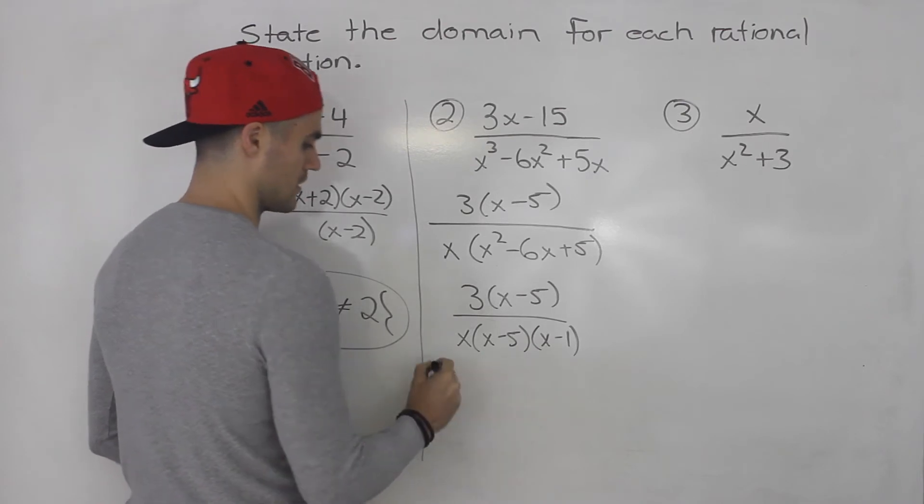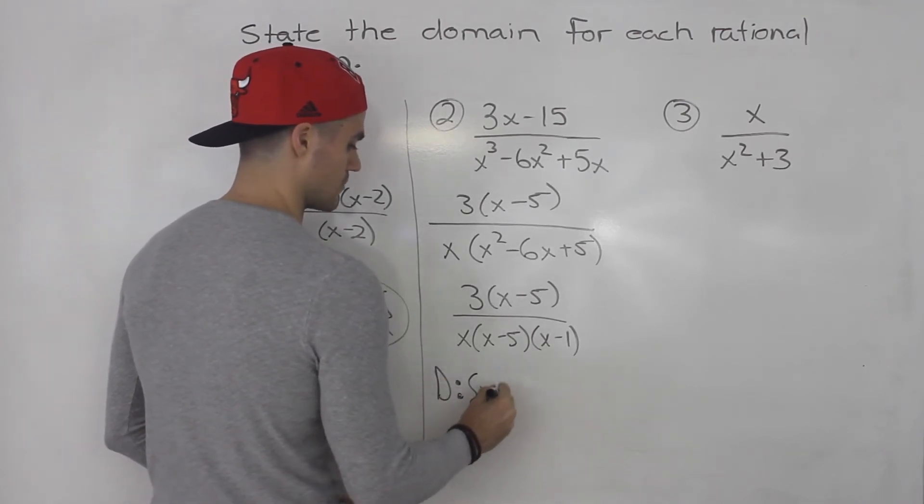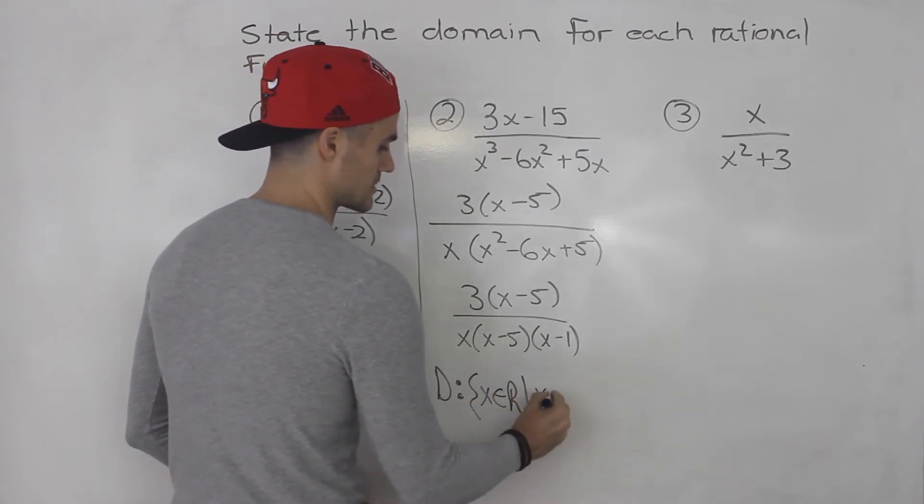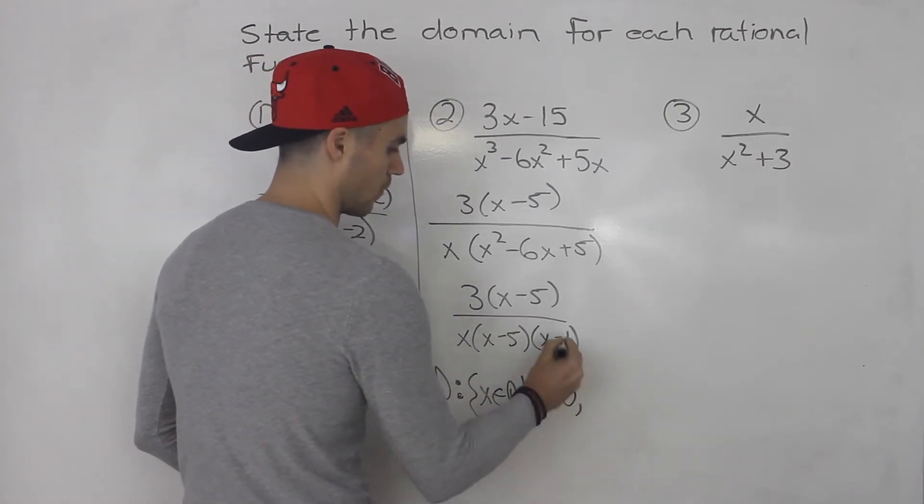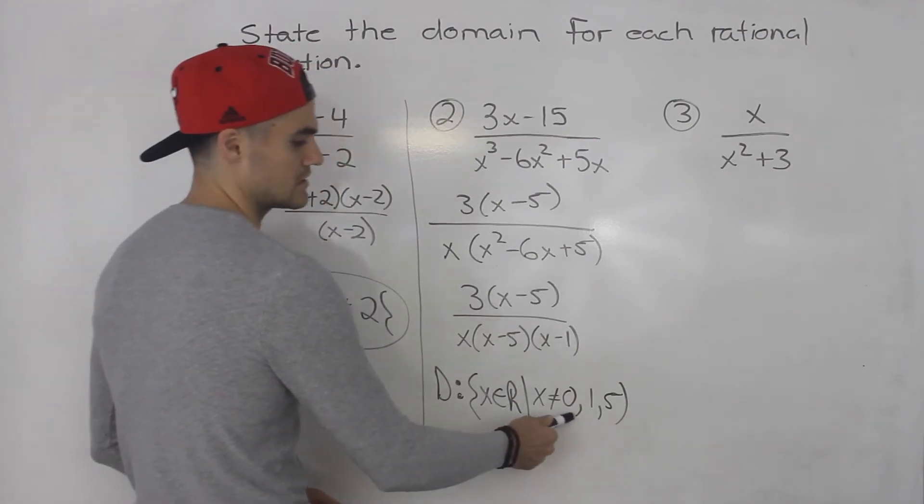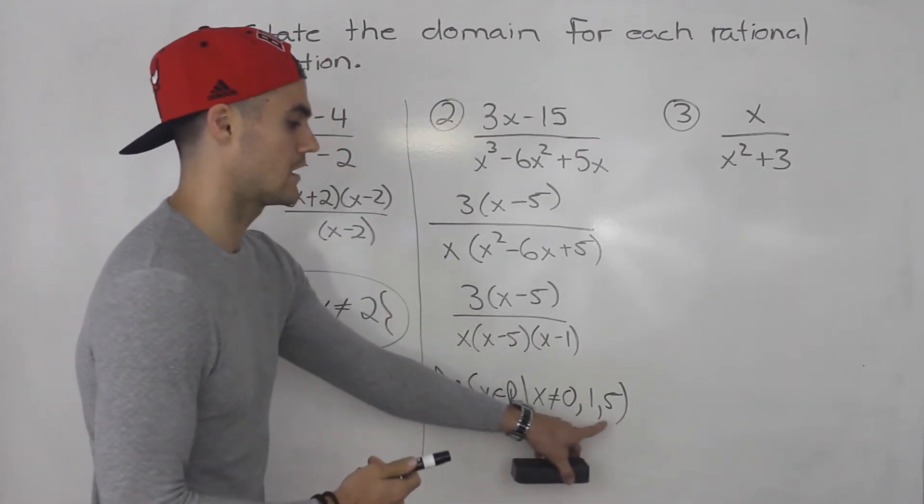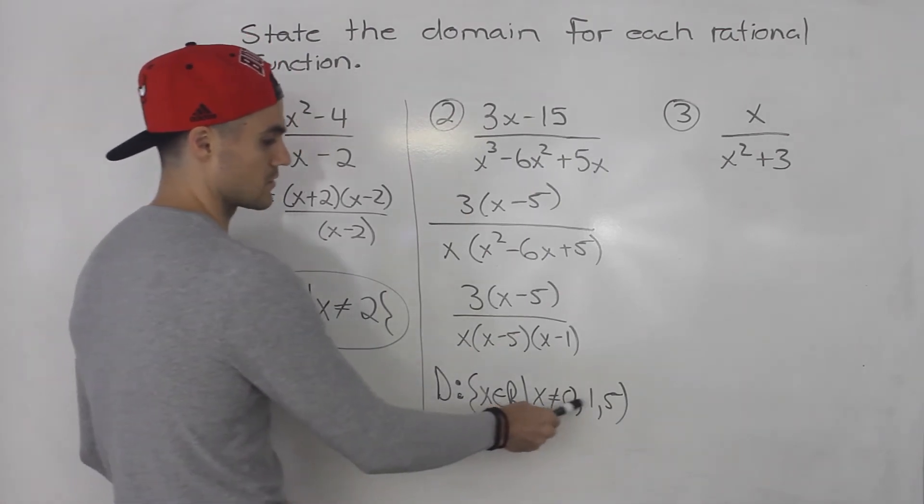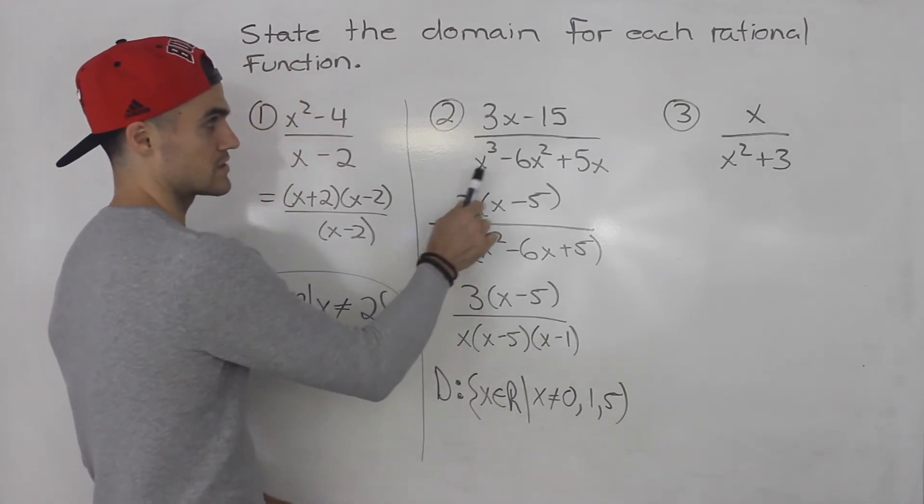And then from here, we could tell what the restrictions are, so we could find the domain. Basically, x can be anything as long as it's not 0, 1, and 5. And usually if you list them out, if there's multiple restrictions, you've got to list them in order, from lowest to highest. So I put 0, 1, and 5. So that's the domain for this rational function.